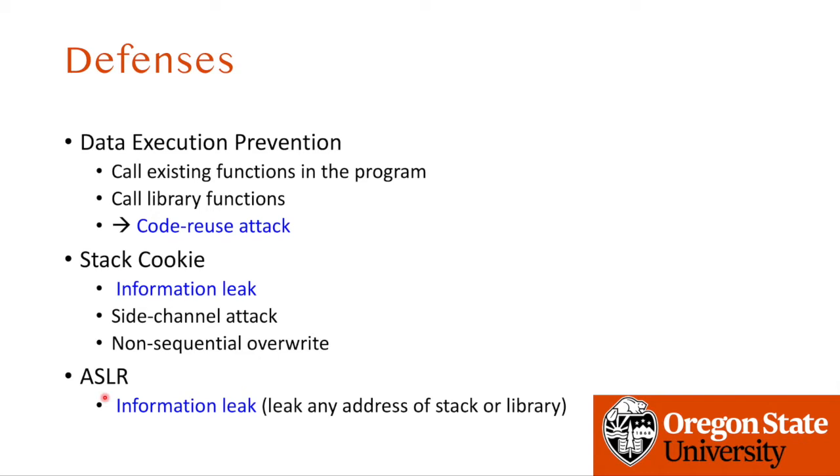For ASLR, if we can obtain any kind of meaningful address and calculate the relative offset to an address of interest, then we can infer the return address or other function addresses from the leaked address and reuse them to avoid the defense. These are the defense mechanisms from the previous lecture, and you are practicing bypassing each defense individually as challenges in week four.